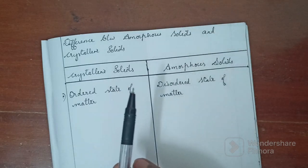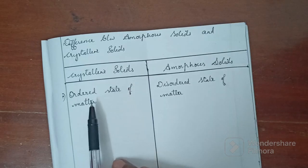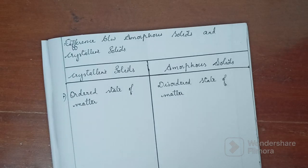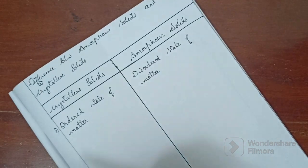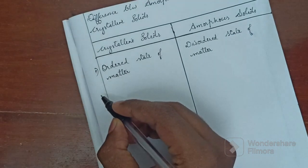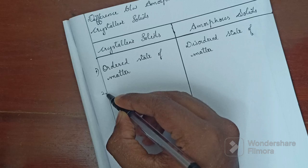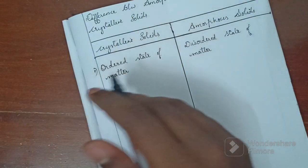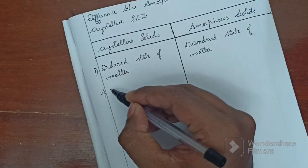Crystalline solids are ordered in a state. Amorphous solids are disordered. Crystalline solids are periodic — they have an infinite, periodic arrangement.